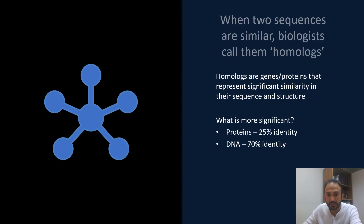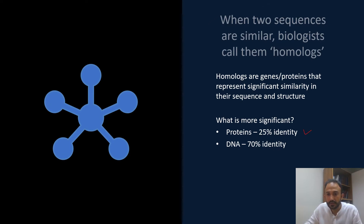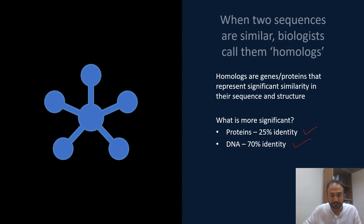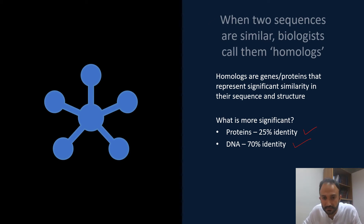One important thing to keep in mind is that there is a difference between having sequence similarity at the protein level versus sequence similarity at the DNA level. For example: what is more significant — a 25% identity between two protein sequences, or a 70% identity between two DNA sequences? You should also discuss this in the discussion part of our class.